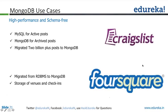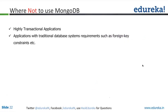Where not to use Mongo? Highly transactional applications, applications with traditional database requirements like foreign key constraints — because it is still a NoSQL system and falls into the category of denormalization. Preferably don't use it wherever you have too many foreign key constraints, lots of joins, and highly transactional applications.